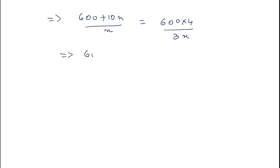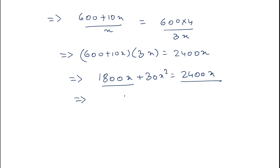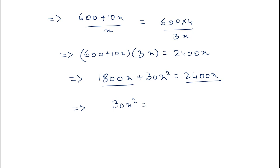Cross multiplying, we get: (600 plus 10x) into 3x equals 600 into 4, which gives 2400 into x. Expanding the left-hand side: 1800x plus 30x squared equals 2400x. Subtracting 1800x from both sides: 30x squared equals 2400x minus 1800x, which equals 600x.